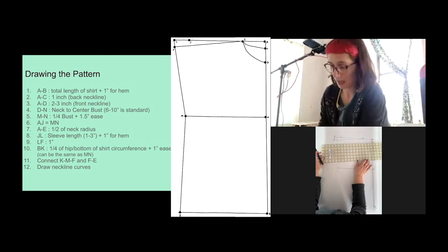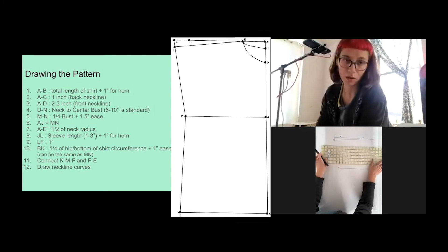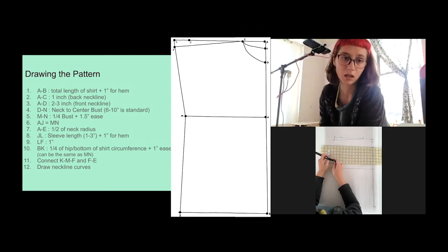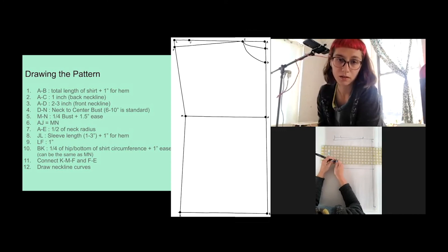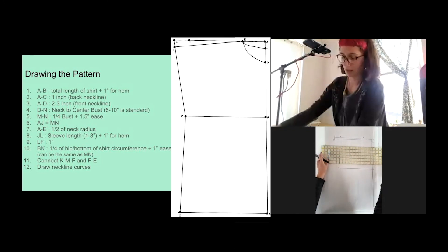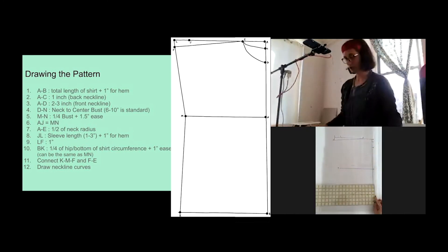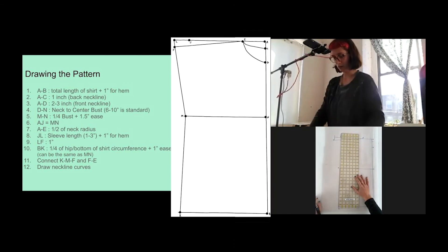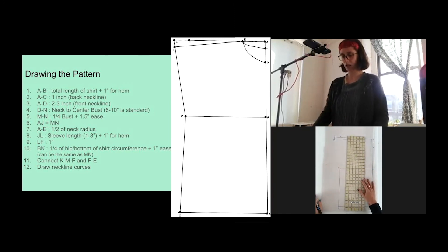And then we can go back down to the bottom and do B to K. You already have B, you're going to mark K, which is a quarter of your hip or hemline shirt circumference. So like I said, mine is the same as M to N, but you might want to do yours slightly differently. Basically, you want to draw a line from K to M, just connecting them. If they're the same measurement, it will be a perfectly straight line. If they're a different measurement, it will be an angled line.